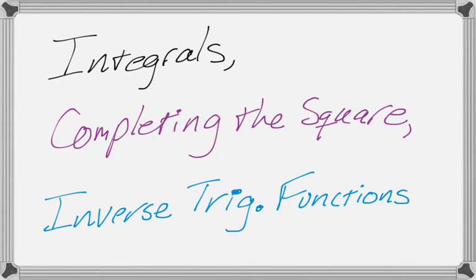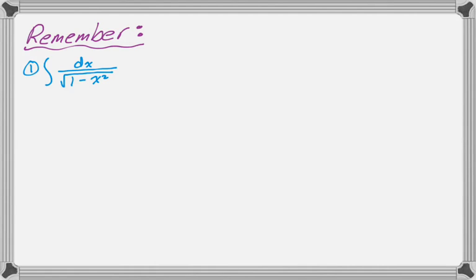In this video we are going to talk about integrals, completing the square, and then the results will be inverse trig functions. So the first thing you've got to remember is that the integral of dx over the square root of 1 minus x squared is equal to arc sine of x plus c.